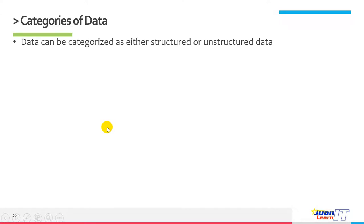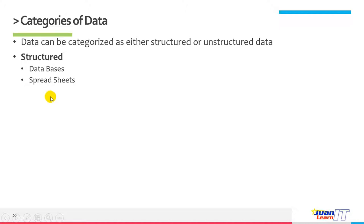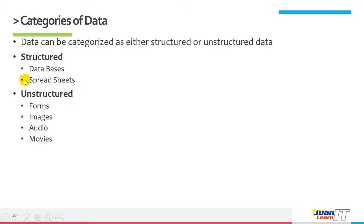Data can be categorized as either structured or unstructured data. When you say structured, that refers to databases, spreadsheets — these are structured. When you say unstructured, this pertains to forms, images, audio, and movies. The difference between structured and unstructured is that structured is managed and organized, while unstructured is not yet polished or organized, and includes forms, images, audio, and movies.